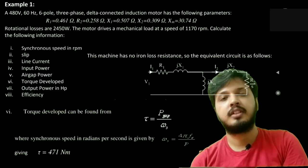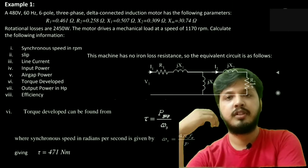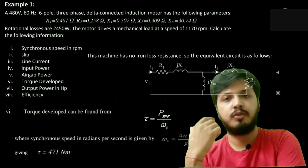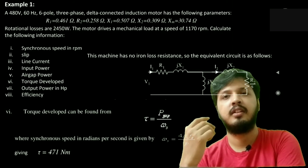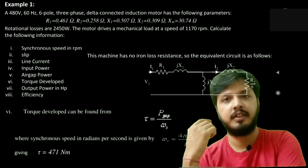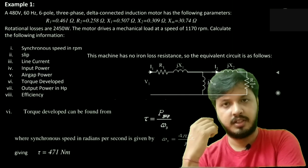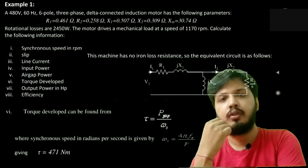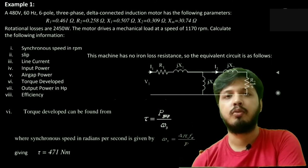We already calculated NS, that is revolution per minute. Now we will calculate in radian per second. So one revolution equals 2 pi radian. Multiply it with 2 pi per second. That is why we will divide it with 60. Now torque equals 471 newton meter.